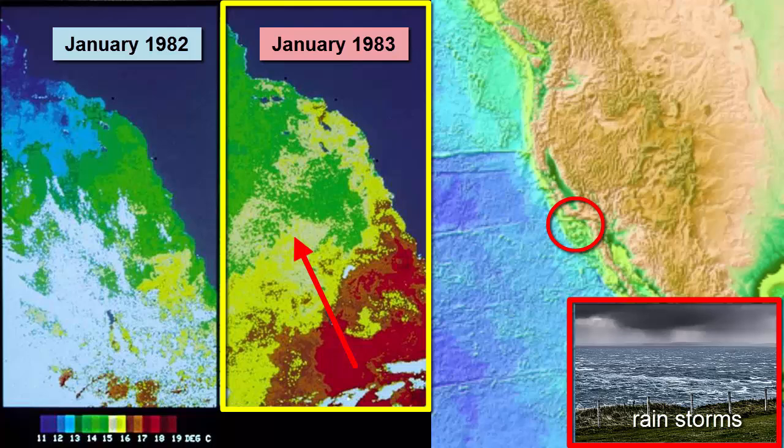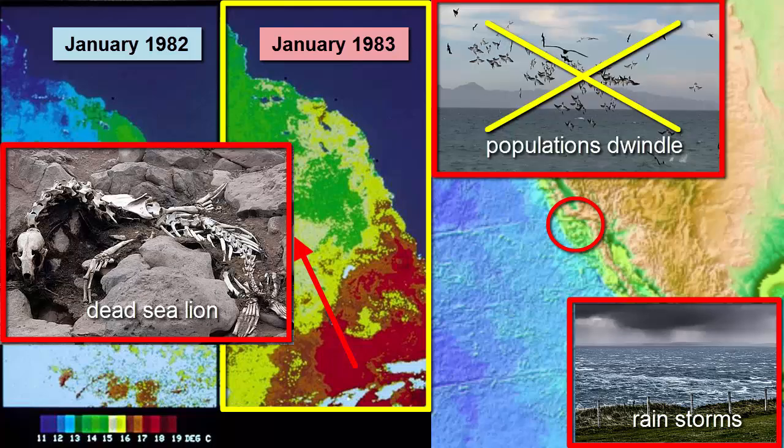Bird, sea lion, and seal populations diminish with the fish. During the 1983 El Niño event, California experienced high mortality rates for marine mammals and significant coastal erosion and flooding.